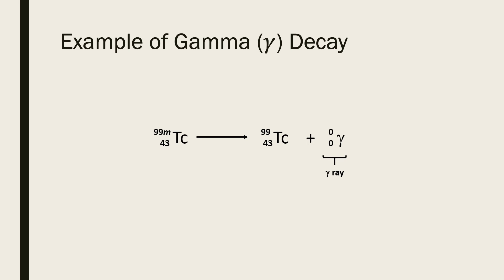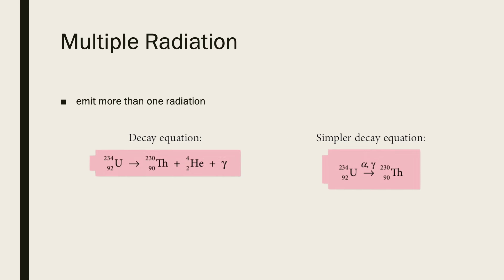Another example of gamma decay uses technetium. This technetium is in an excited state and is unstable, so it becomes a nucleus with less energy and releases a gamma ray. Sometimes multiple radiations can occur. During a radioactive decay, some nuclei can emit more than one radiation. For example, during the disintegration of uranium-234, its nucleus emits an alpha particle and a gamma ray. We can write it in simpler form where uranium-234 decays into thorium-230, and we write alpha and gamma on the arrow.